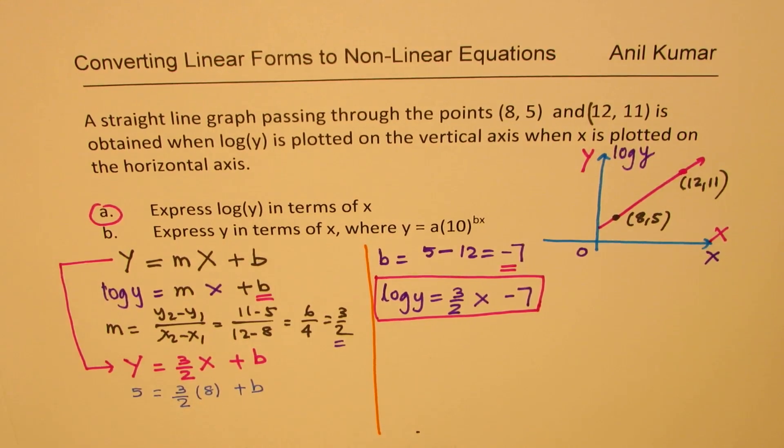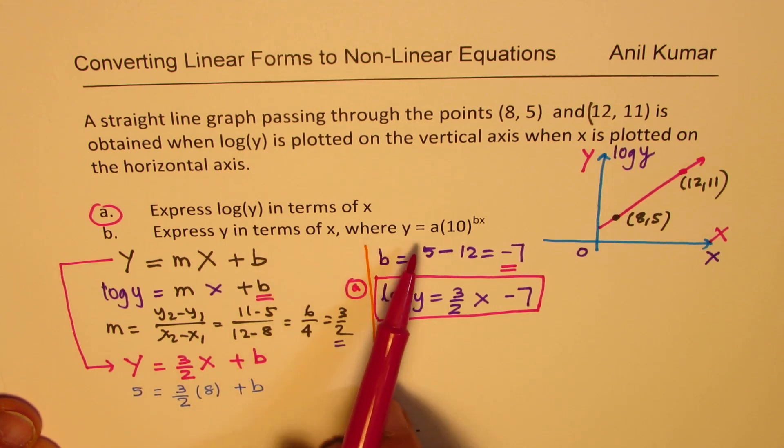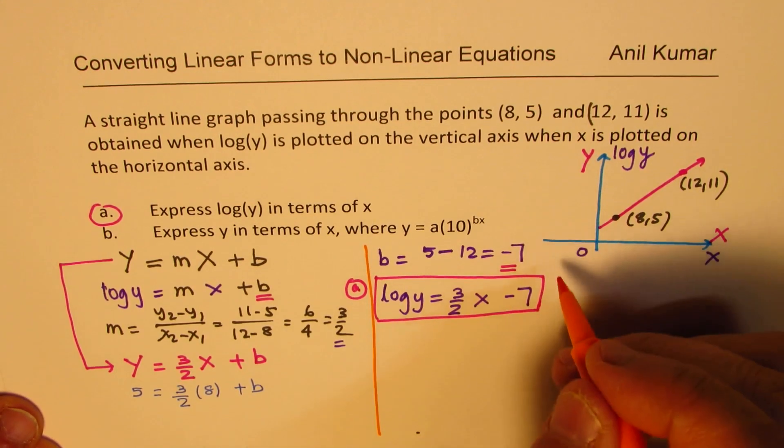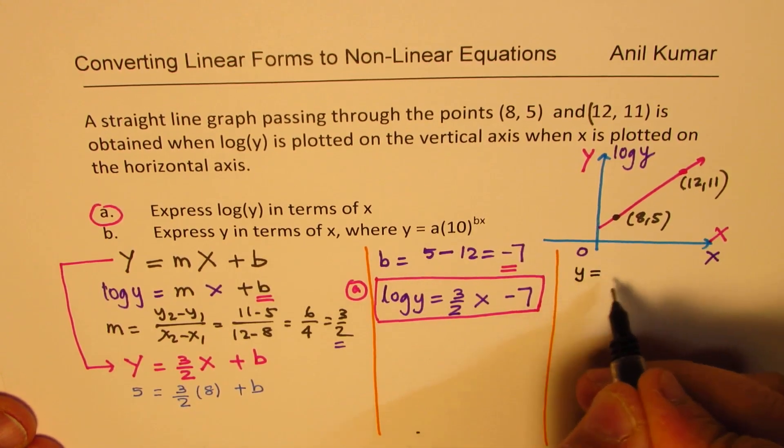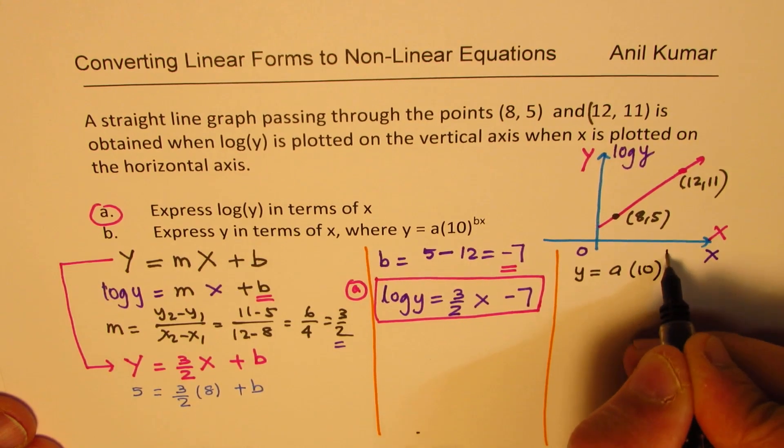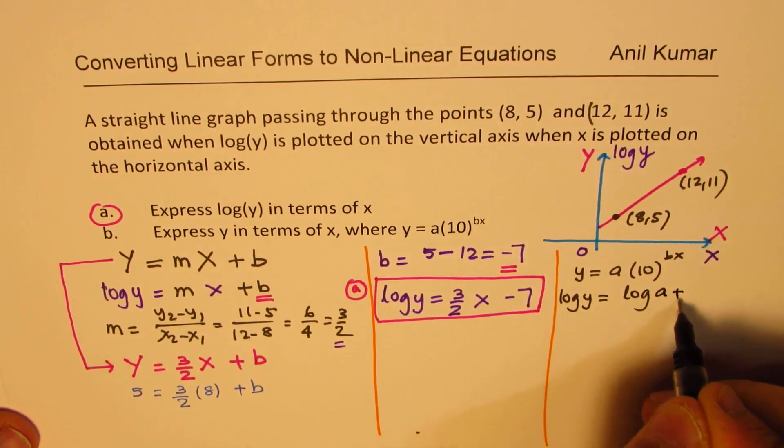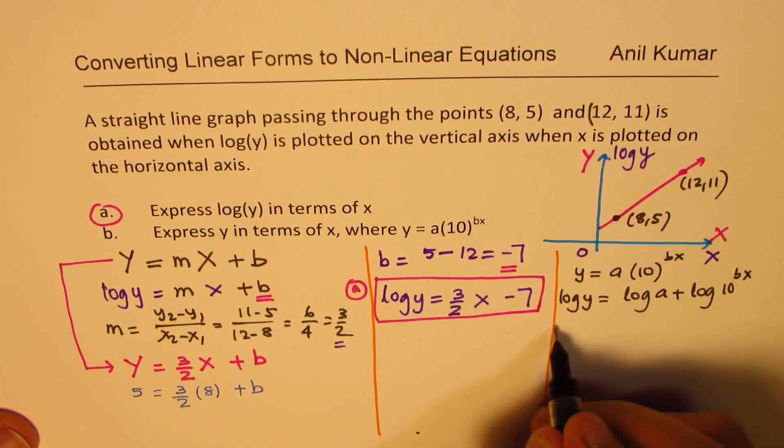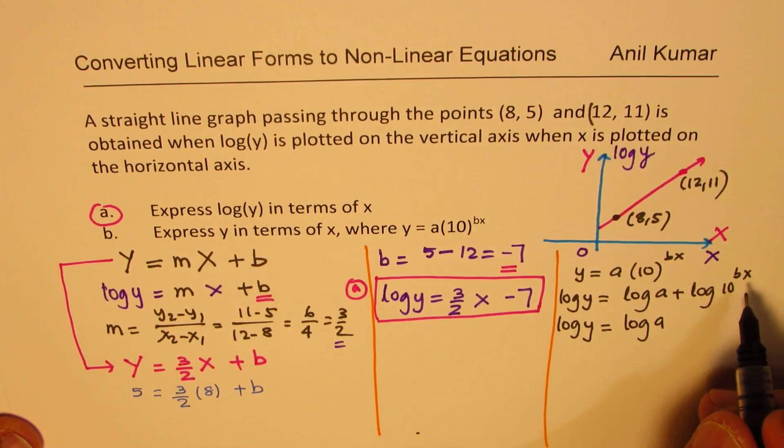Perfect. Now let's look into the solution of part b. So this is our part a done. Express y in terms of x, where y equals a times 10 to the power of bx. Now let's look into this portion. So when we say y is equal to a times 10 to the power of bx, taking log on both sides, we get log of y equals log of a plus log of 10 to the power of bx.